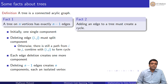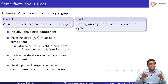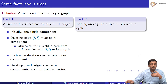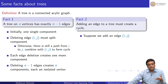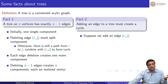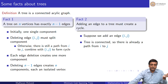The second fact is the flip side: adding an edge to a tree creates a cycle. Since any two vertices i and j are already connected in the tree, adding an edge between them creates a second path between i and j, which forms a cycle. So adding any edge to a tree always creates a cycle.